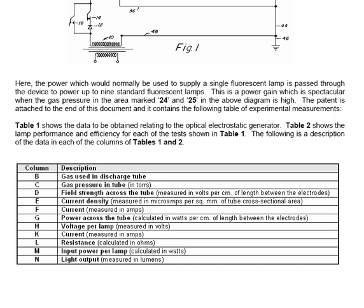In Column H, the voltage per lamp. In Column K, the current measured in amps. In Column L, resistance in ohms. In Column M, the input power per lamp in watts. And finally, in Column N, the light output measured in lumens.